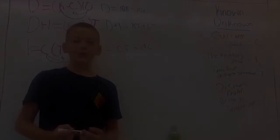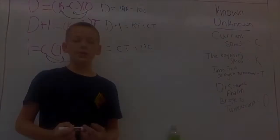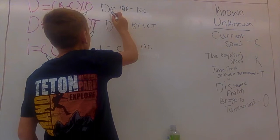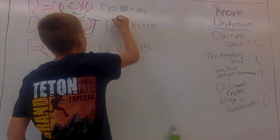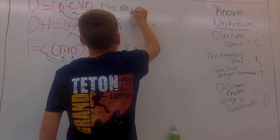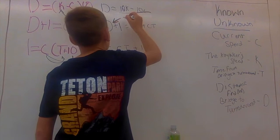So now we are going to use our synonyms. And this D right here is equal to 10K minus 10C, which means this D right there is also equal to 10K minus 10C. So, when we write our next sentence, this D is going to become 10K minus 10C.